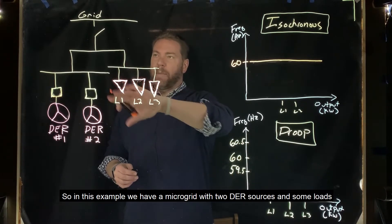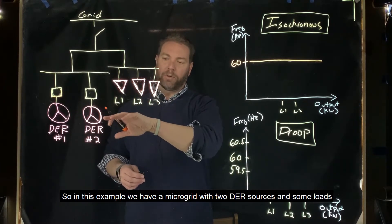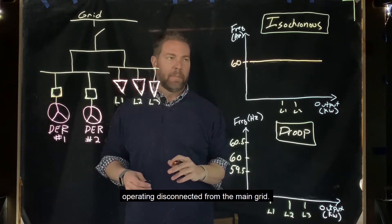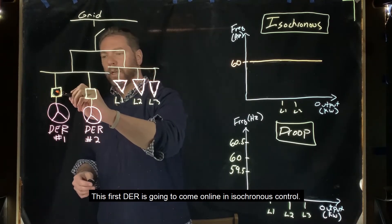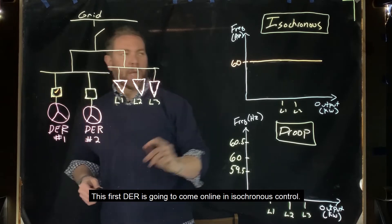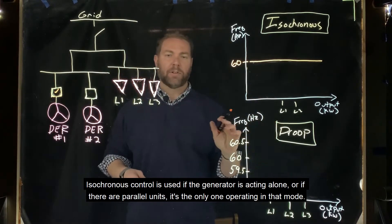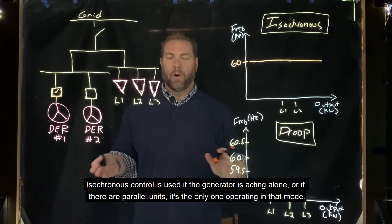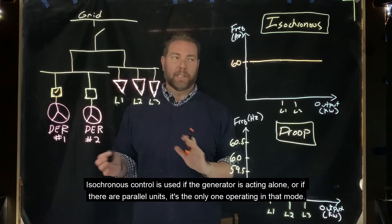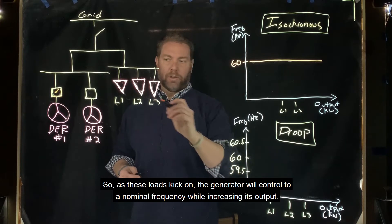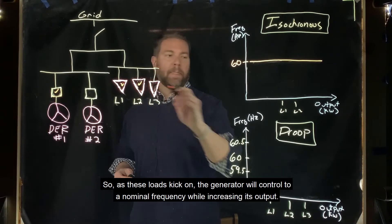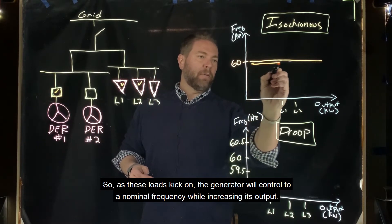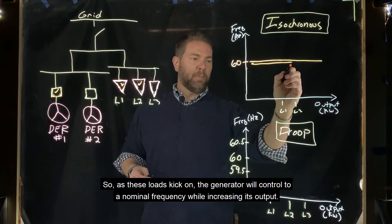In this example, we have a microgrid with two DER sources and some loads operating disconnected from the main grid. This first DER is going to come online in isochronous control. Isochronous control is used if the generator is acting alone, or if there are parallel units, it's the only one operating in that mode. As these loads kick on, the generator will control to a nominal frequency while increasing its output.